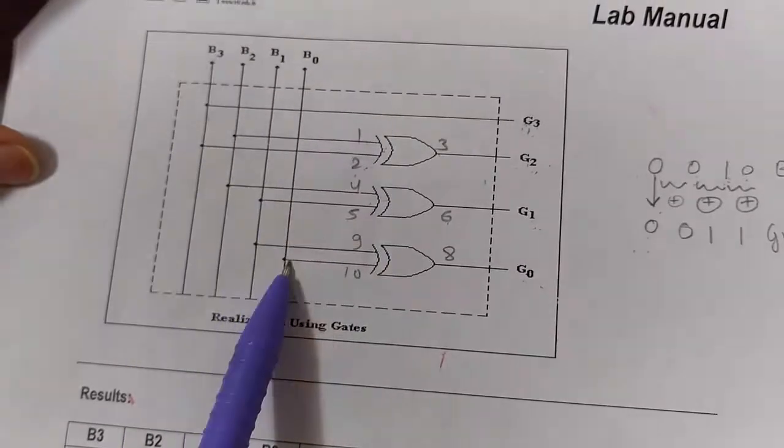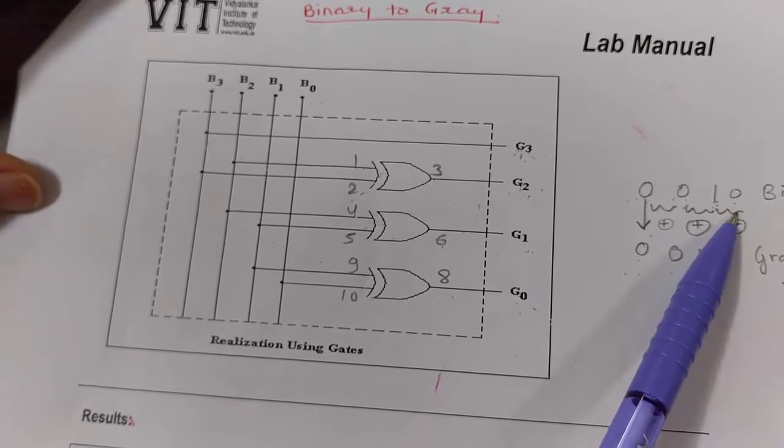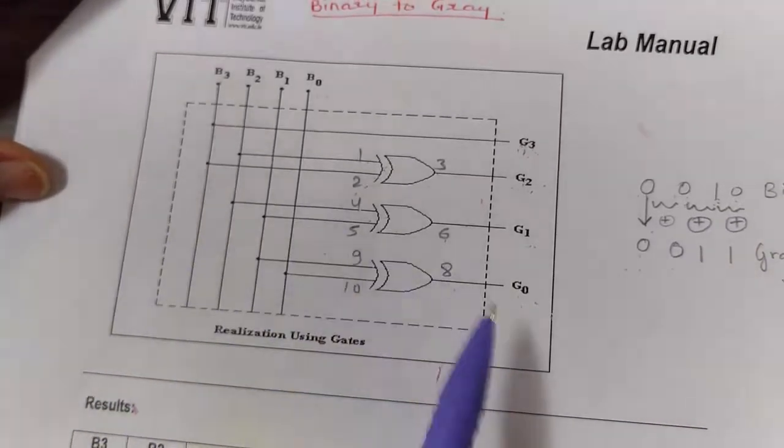Now we connect B1 to pin 9 and B0 to pin 10, and take output from pin 8, which is our G0. The third and last digits are XORed together and we get this output. This is how the circuit is implemented.